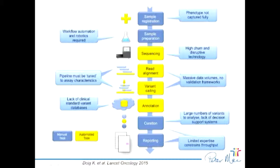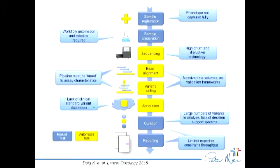The blue boxes represent the problems that exist at the moment and what we're trying to solve. We're trying to automate the workflow, including wet lab robotics, and capture phenotype with a nicely defined ontology — describing the disease accurately rather than just what the doctor thinks might be a good description. There's a high churn of disruptive technology: every few years a new technology comes out and all the algorithms we've been using may no longer be relevant. Data volumes are increasing. The bottleneck right now is the curation process — being able to say something sensible about those genes in a clinical context. That's no mean feat, and there are very few people who can actually do that. It's an emerging new profession.